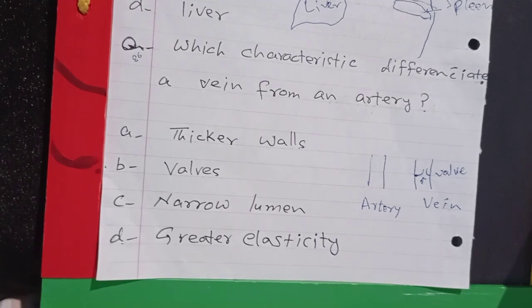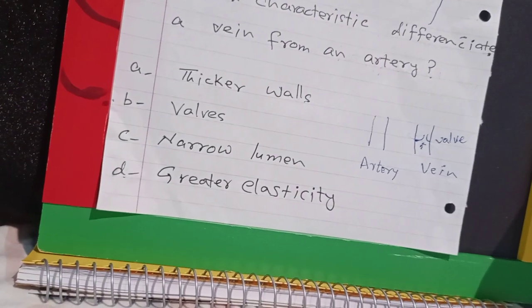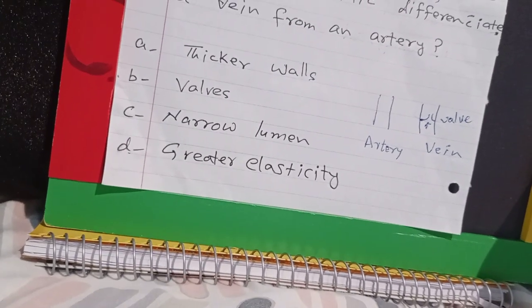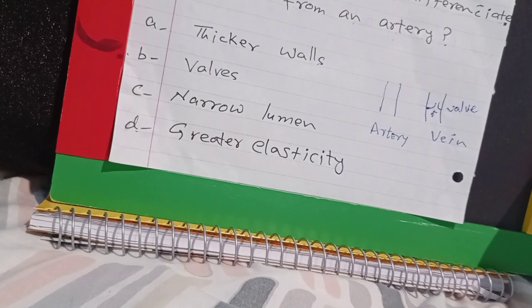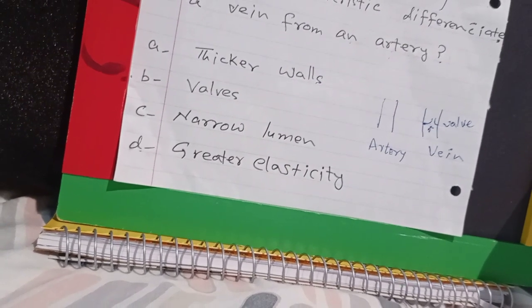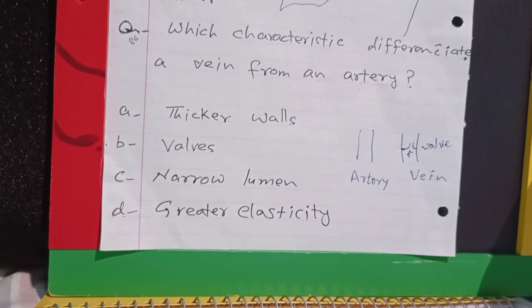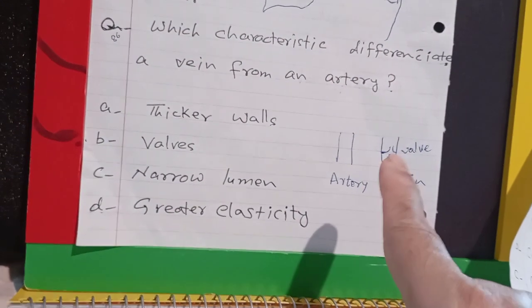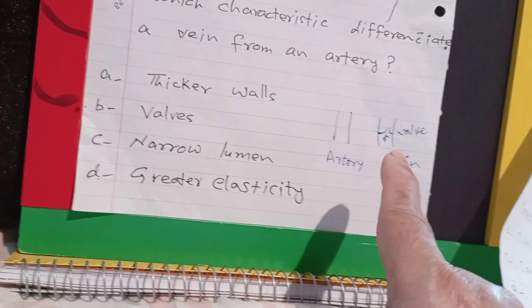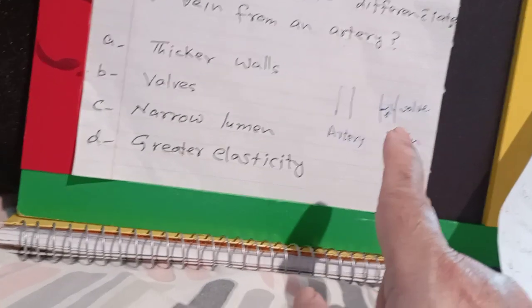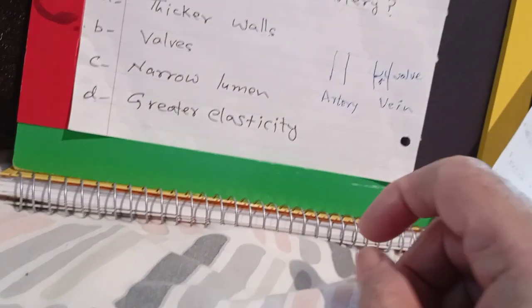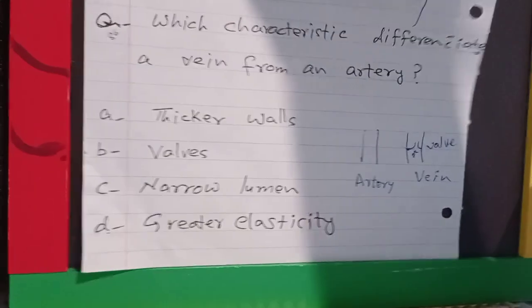Which characteristic differentiates a vein from an artery? Thicker walls, valves, narrow lumen, or greater elasticity. The answer is B: valves. Veins have valves and arteries do not. Veins have valves because they are low-pressure structures — they need help, so they are supported by valves. Arteries are a high-pressure system and do not need any support, so they do not have valves.